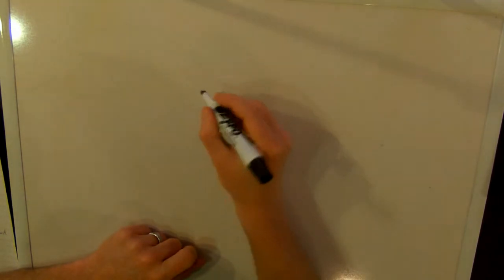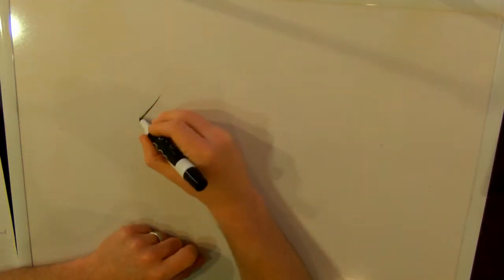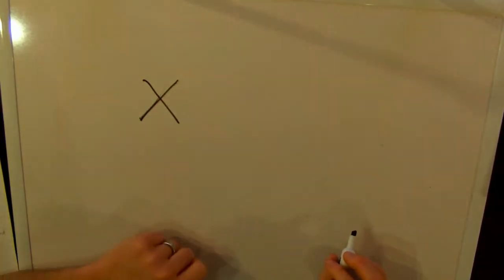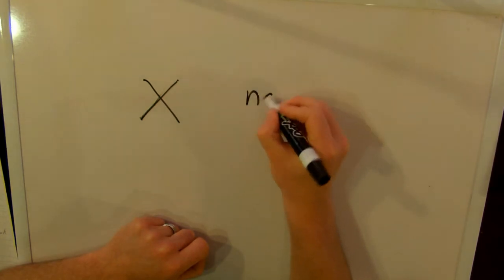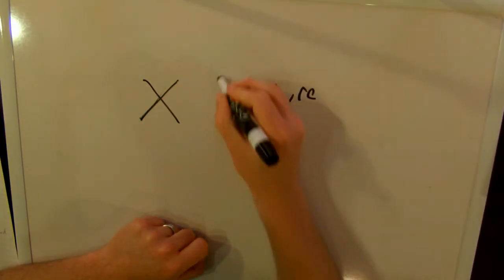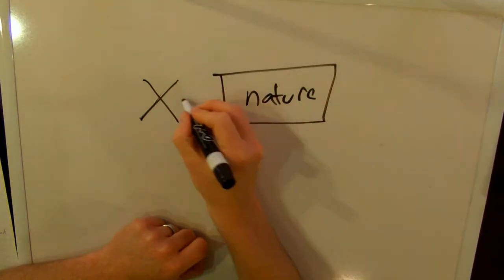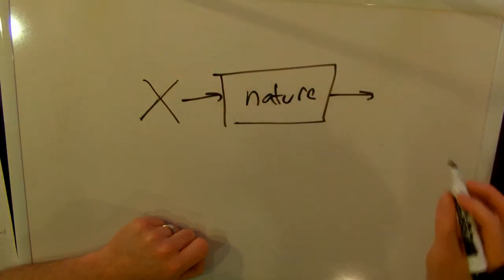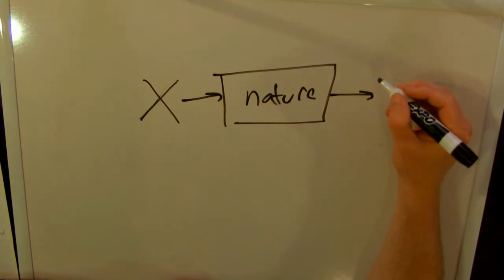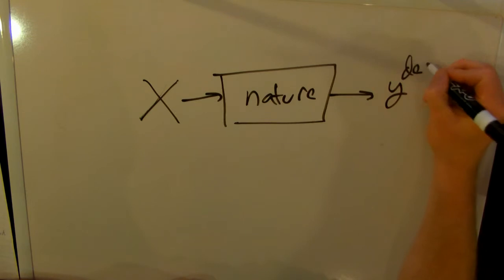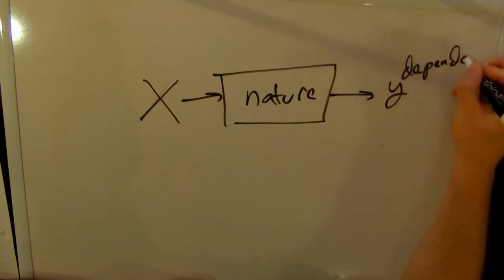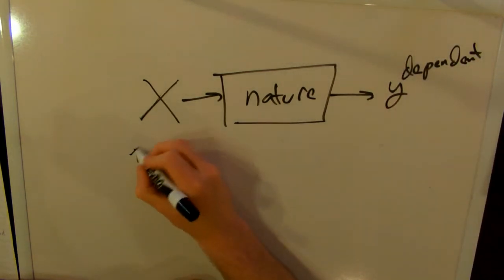If you remember from before, we said that we have some data, and I'm now going to call that data X, and we have a process that we probably can't know because it's very complicated. I'm going to call it nature. We're going to consider it a black box, and from that black box comes whatever we want to get out of our model. Let's assume we're doing supervised learning for now, so we'll call that Y. This is our dependent variable, whereas X is our independent variables.